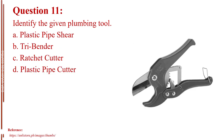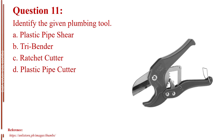Question number eleven. Identify the given plumbing tool. Letter A, plastic pipe shear. Letter B, tri-bender. Letter C, ratchet cutter. Letter D, plastic pipe cutter. The answer is Letter D, plastic pipe cutter.